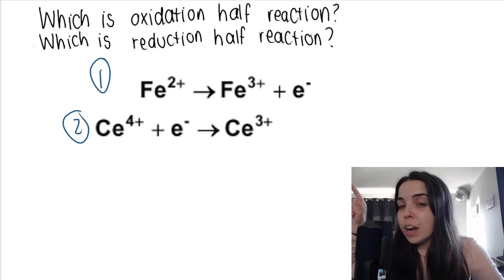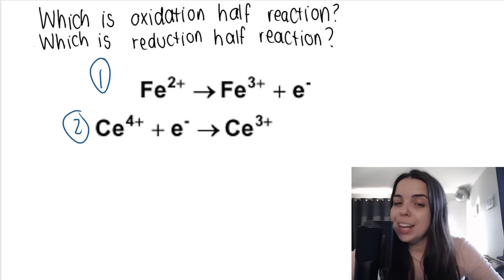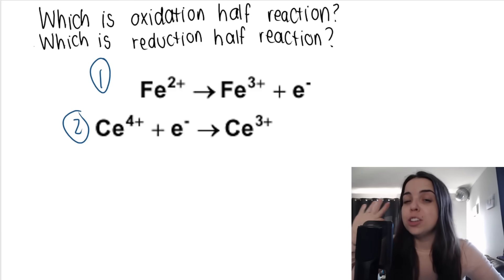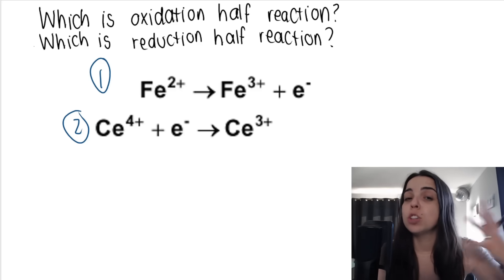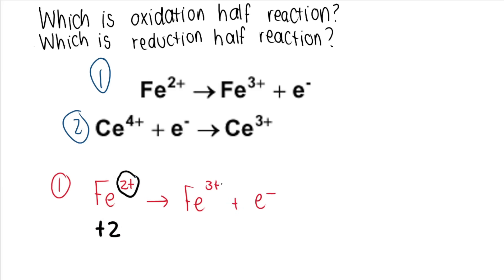If I give you two reactions and ask which is the oxidation half reaction and which is the reduction half reaction, you should be able to tell just by looking at them. Let's take a look at number one. One way is to look at oxidation numbers. In Fe2+, the oxidation number is plus two. When it becomes Fe3+, the oxidation number is plus three.